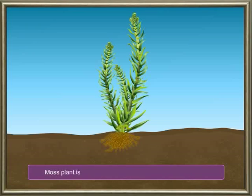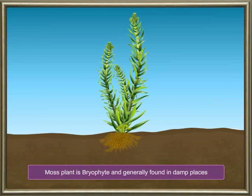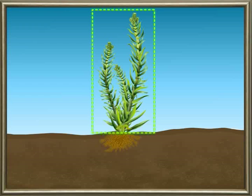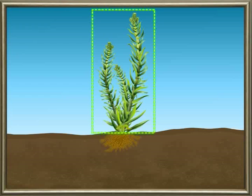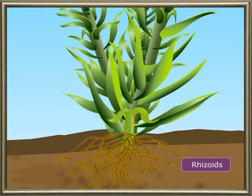Now we will see how reproduction takes place in the moss plant. The moss plant is a bryophyte and is generally found in damp places. The plant has a tiny stem-like structure and a number of small leaves. Fine hair-like structures called rhizoids fix the plant in the soil.